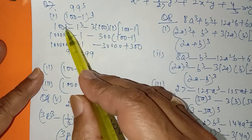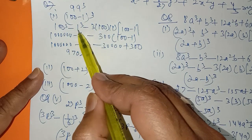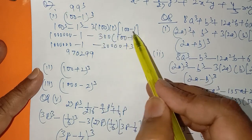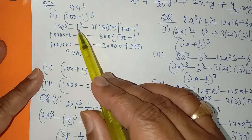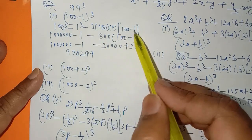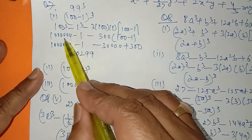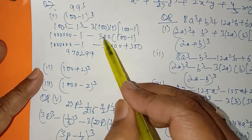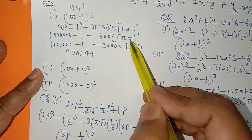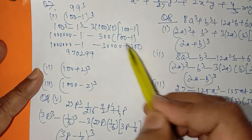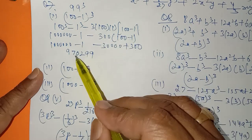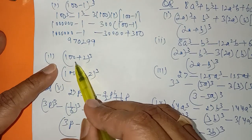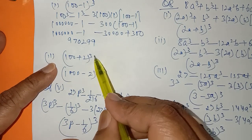What identity do we use? a³ minus b³ minus 3ab(a minus b). Apply the whole cube: 1 million minus 300 into (100 minus 1). Multiply this and add 300, then simplify, and you will get the answer.